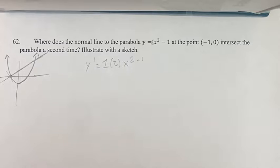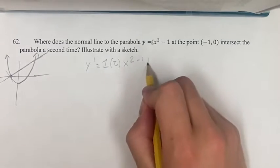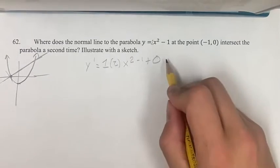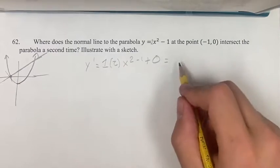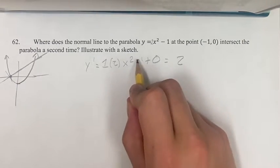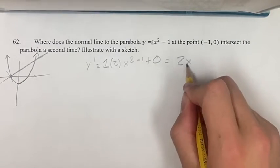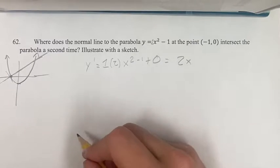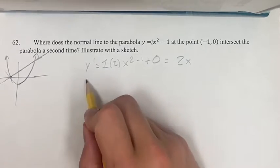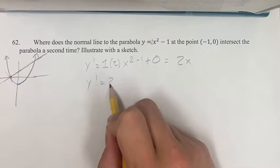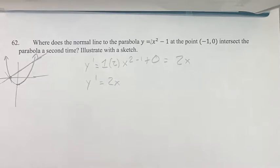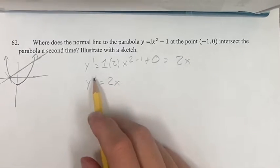Derivative of negative 1, negative 1 is a constant so therefore its derivative is 0. So therefore your derivative is equal to 1 times 2 is 2, x to the 2 minus 1 is x to the first power which is just x. So therefore the derivative is y prime is equal to 2x.